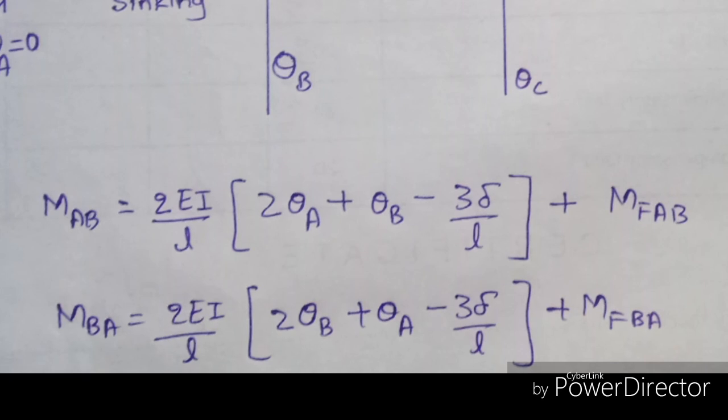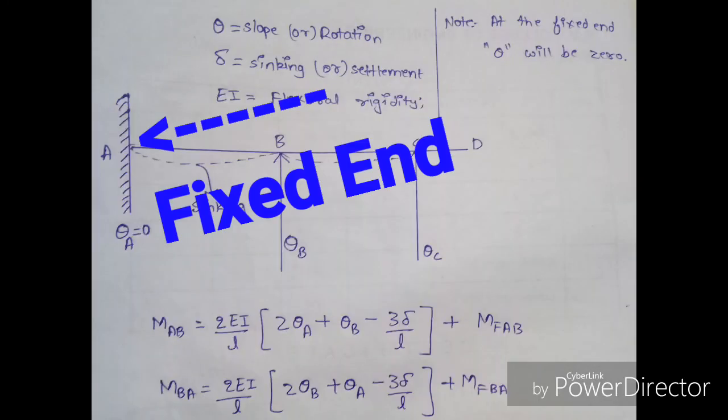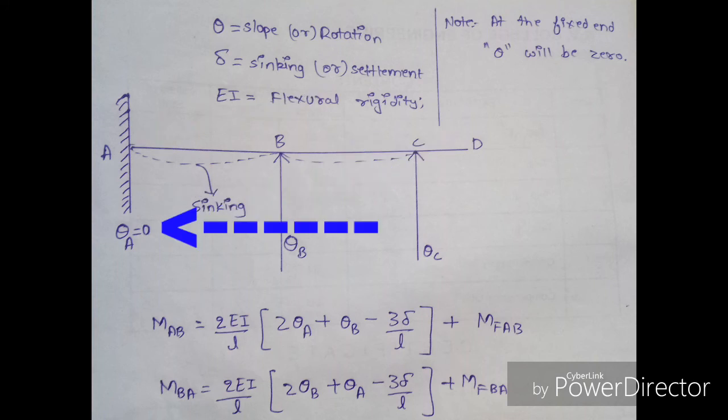I will explain each and every term. Look at the diagram — since end A is fixed, the slope or rotation at A will be zero, that is θ_A = 0. θ_B and θ_C are unknown, hence we have to find them. Delta is the sinking — if the beam settles or sinks, we take it as delta. EI is the flexural rigidity. Always remember that at the fixed end, theta will be zero, that is the slope will be zero.